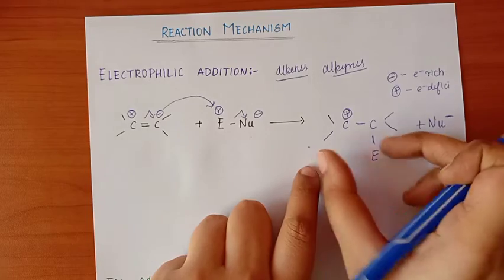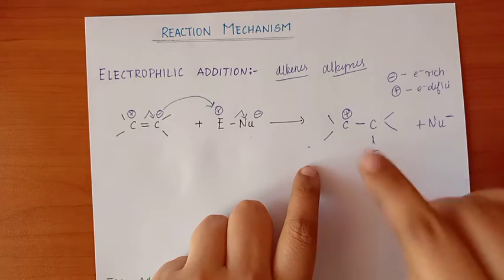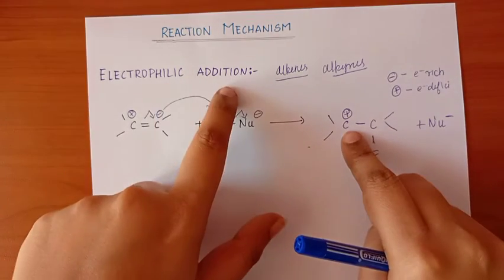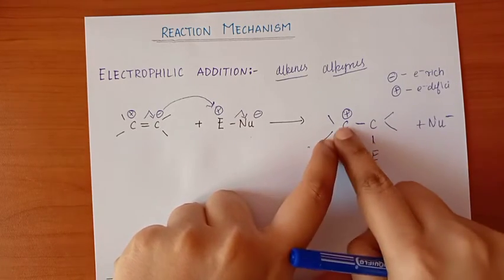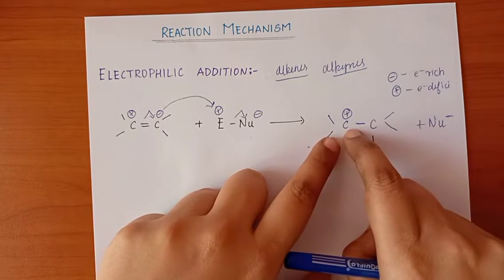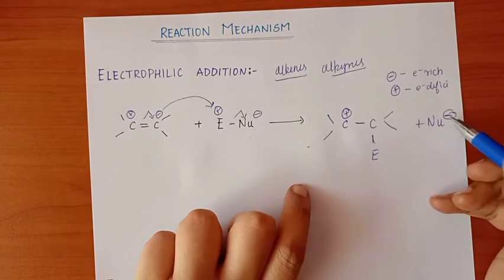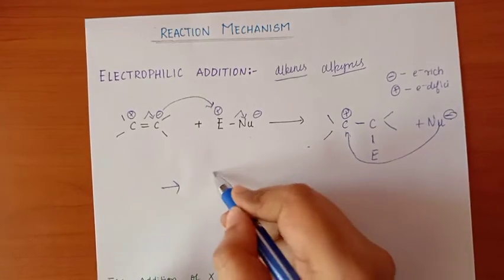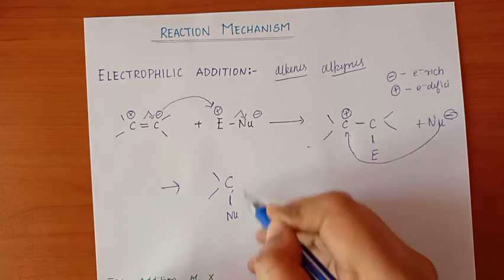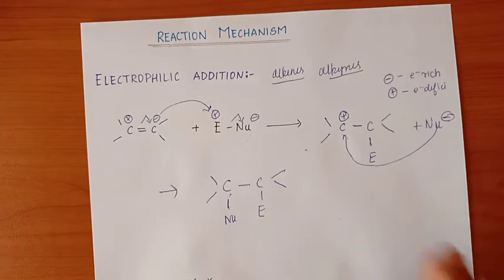This forms an intermediate — a carbocation intermediate. The electron-rich species is the nucleophile, and the electron-poor species is the electrophile. Finally, the nucleophile attacks the electrophilic carbon to form the final product of Electrophilic Addition.